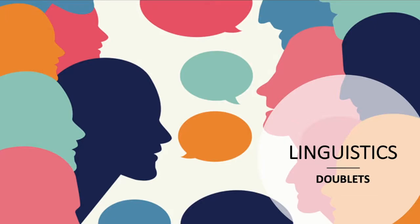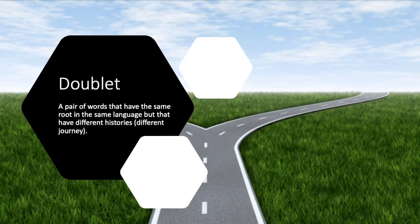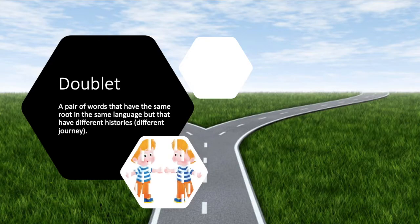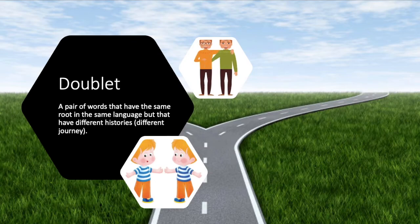Let's talk about doublets. What's a doublet? It's a pair of words that have the same root in the same language but that have different historical journeys. You can think of it like a twin — they have the same root, which is the origin of the parents, but they can grow apart as time goes on, while still sharing those parents.